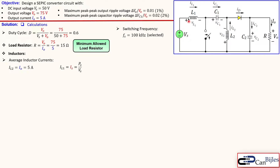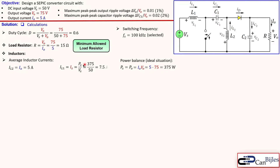For L1, the average current equals the average current of the source IS. Using the power relationship, that is the source power divided by the source voltage. In the ideal case we use power balance: input power equals output power, so source power equals load power. The load power is output voltage times output current: 5 × 75 = 375 watts. Therefore the average current of L1 is 375 ÷ 50 = 7.5 amps.